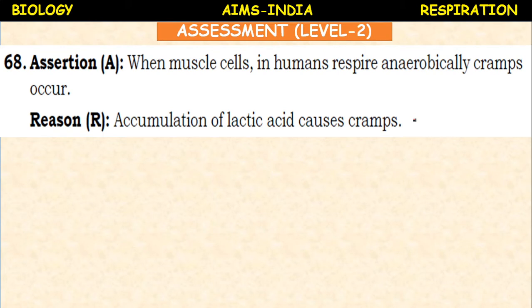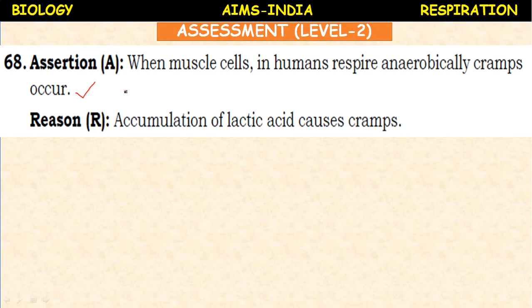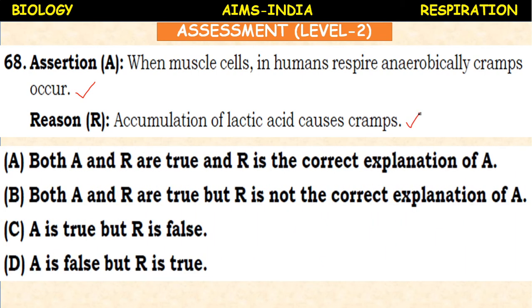Assertion — when muscle cells in humans respire anaerobically, cramps occur. This is true, as covered in the lesson. Reason — accumulation of lactic acid causes cramps. This is also correct and is the correct explanation. Both assertion and reasoning are true and the reason is the correct explanation, because muscle cramps during strenuous exercises occur due to accumulation of lactic acid.